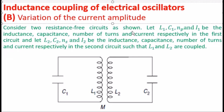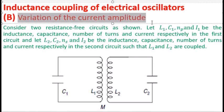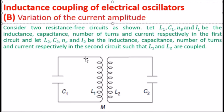Last time we discussed inductance coupling of electrical oscillators, and we derived a relation between the self-inductances of two coils and the mutual inductance between them. We are studying inductance coupling of electrical oscillators, looking at the variation of current. I have two coils — primary and secondary — and I have to make the calculation.